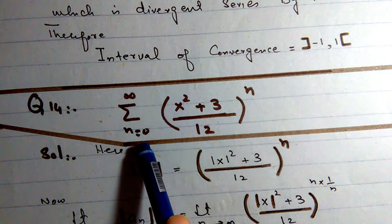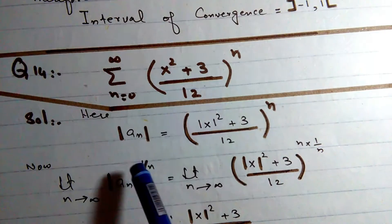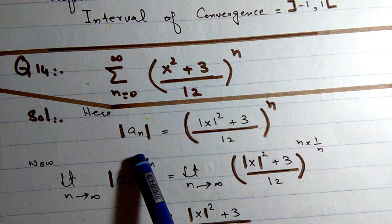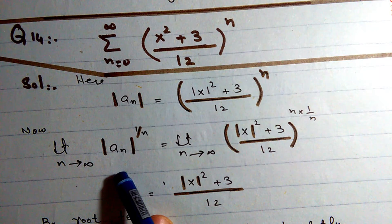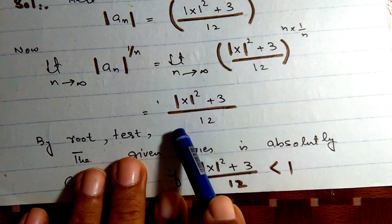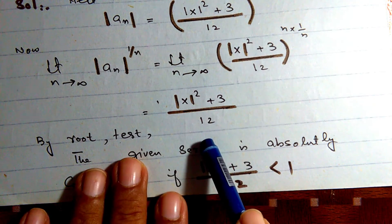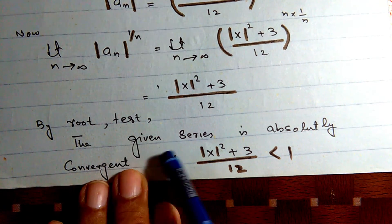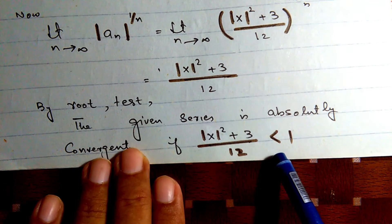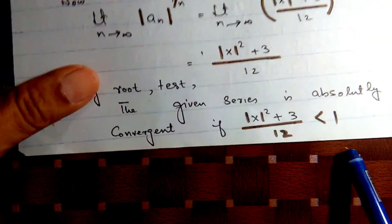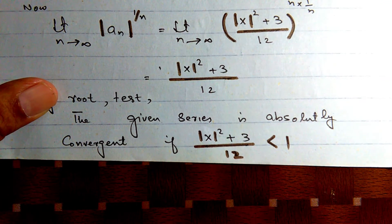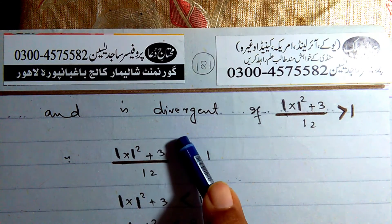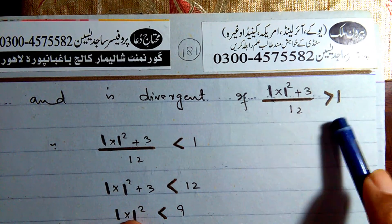Question 14: Summation of ((x²+3)/12)^n. We take the absolute value and apply the root test. |a_n|^(1/n) = |x²+3|/12. The series converges absolutely when |x²+3|/12 < 1, i.e., |x²+3| < 12.